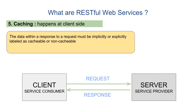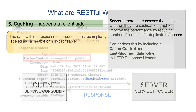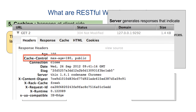Caching happens at the client side. Whenever a client sends a request to the server, the server gives back a response which contains the actual data. Along with the actual data, there are some metadata or other information in the headers which tells the client whether it has to store the response locally — in other words, whether the client has to cache the response or not. The server generates a response and in the response we also have headers like cache-control and last-modified.